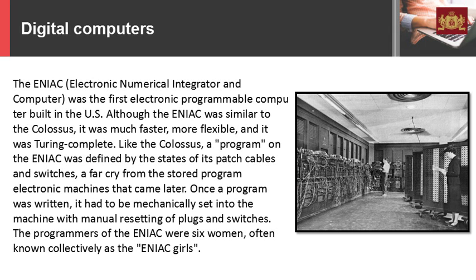The ENIAC — Electronic Numerical Integrator and Computer — was the first electronic programmable computer built in the US. Although the ENIAC was similar to the Colossus, it was much faster, more flexible, and it was Turing complete. Like the Colossus, a program on the ENIAC was defined by the states of its patch cables and switches, a far cry from the stored program electronic machines that came later. Once the program was written, it had to be mechanically set into the machine with manual resetting of plugs and switches. The programmers of the ENIAC were six women, often known collectively as the ENIAC girls.